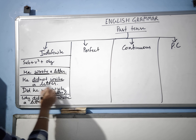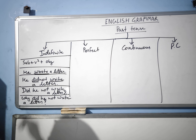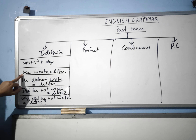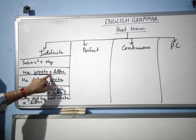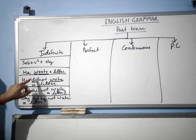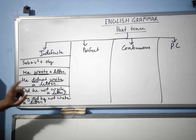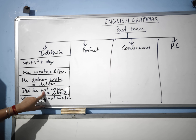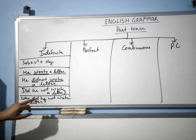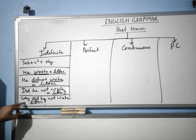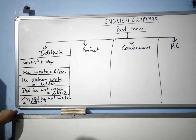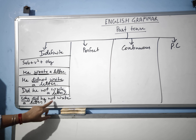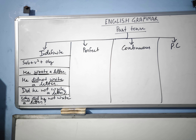To summarize: in the affirmative, use subject plus verb second form plus object. In the negative, use 'did not' plus verb first form. In the first type of interrogative, 'did' comes at the beginning, then subject and 'not', then verb first form and object. In the second type, the WH word comes first, then the helping verb, then subject, not, verb first form, and object. These are past indefinite forms.